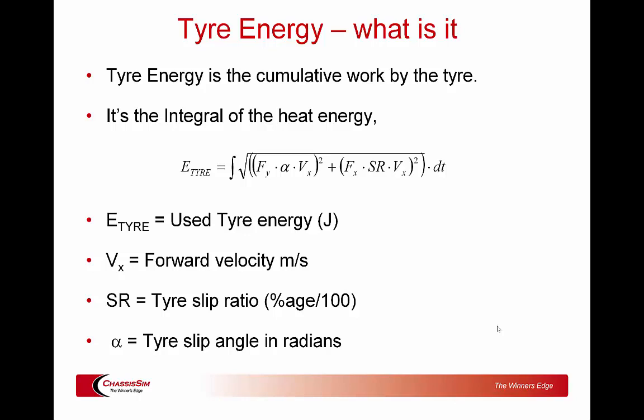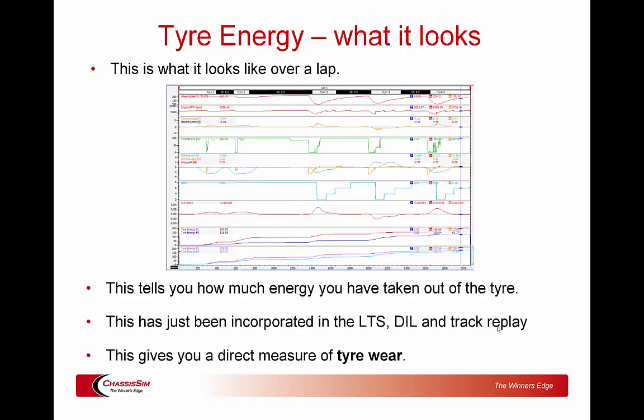In strict SI units this is measured in joules, but we'll often talk about it in kilojoules for convenience. Forward velocity is in meters per second, slip ratio is the tire slip ratio expressed as a factor (percentage divided by 100), and tire slip angle is measured in radians. If you want to construct your own math channel, this is how you go about doing it.